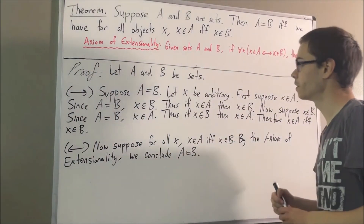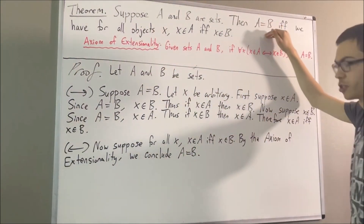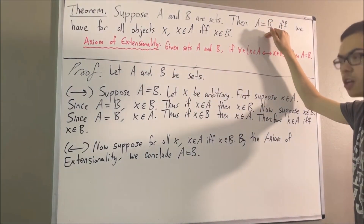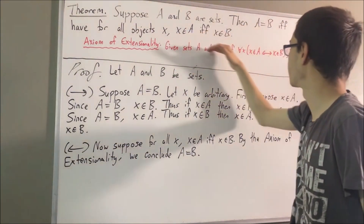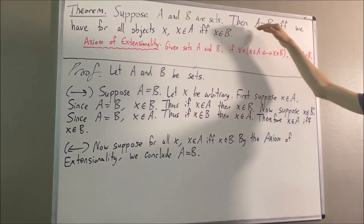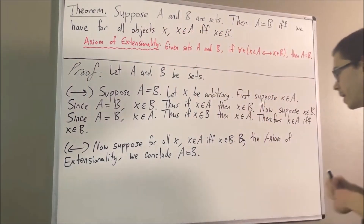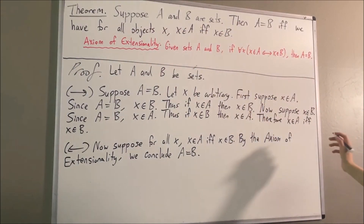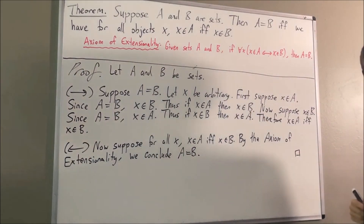So, we have proven both directions of the if and only if, which means we've proven the entire statement. And that's exactly what we wanted to prove. So this completes the proof.